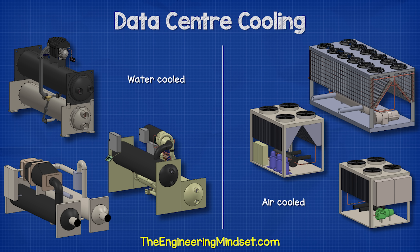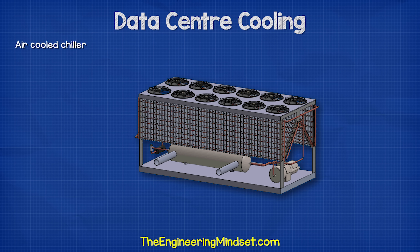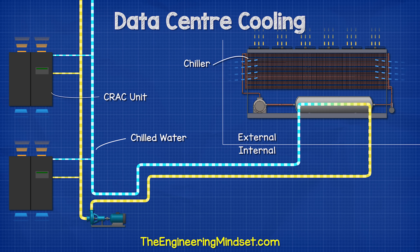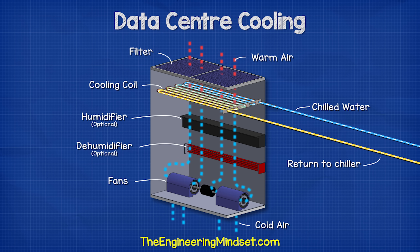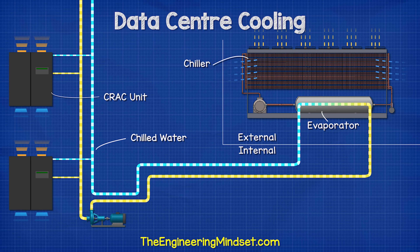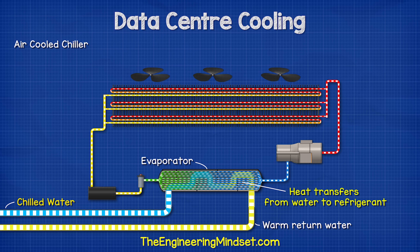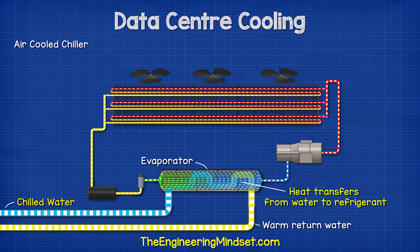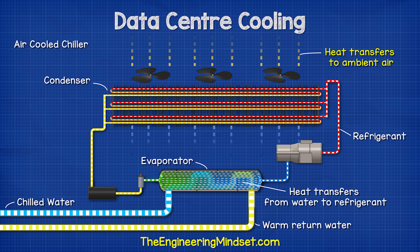Larger data centers will use chillers, either water-cooled or air-cooled type. With air-cooled systems, the chiller is installed externally. This provides chilled water to the CRAC unit, which flows through a heat exchanger to pick up the unwanted heat from the air. The fan moves the hot air over the heat exchanger and once the heat is removed, it is pushed into the void under the floor. The water returns to the chiller where it enters the evaporator and the heat is transferred into a refrigerant. The refrigerant removes the heat from the water and cools it down, then cycles the water around again to collect more heat. The refrigerant flows to the condenser where fans move ambient air over the pipes to reject the heat to the atmosphere, before flowing back to the evaporator to collect more unwanted heat from the water.